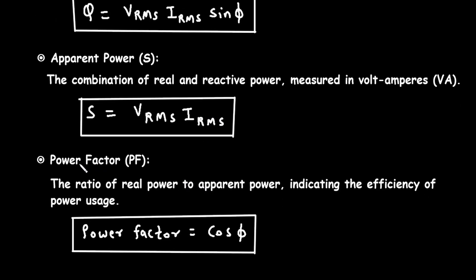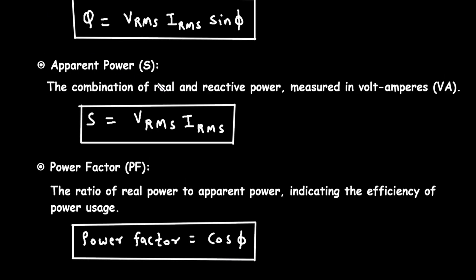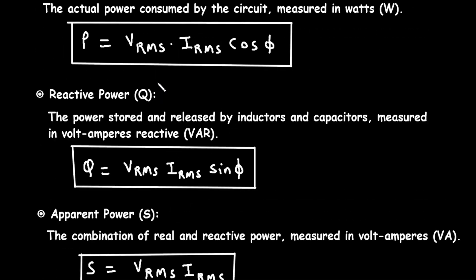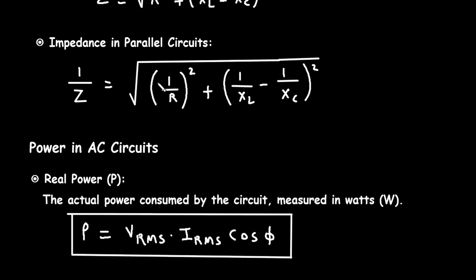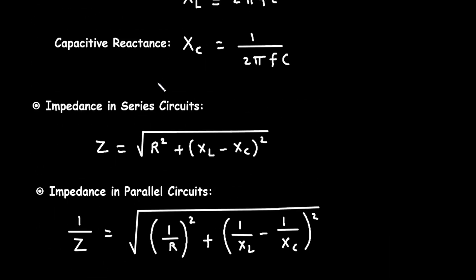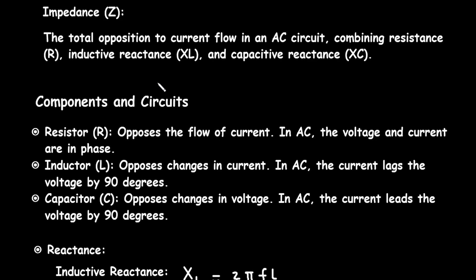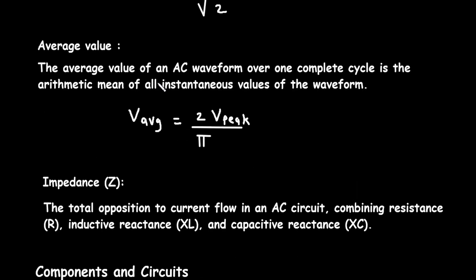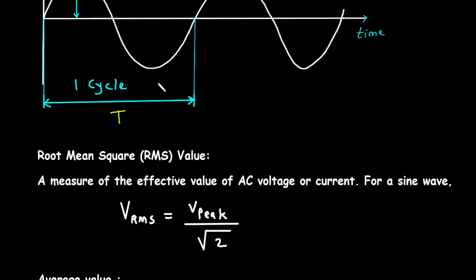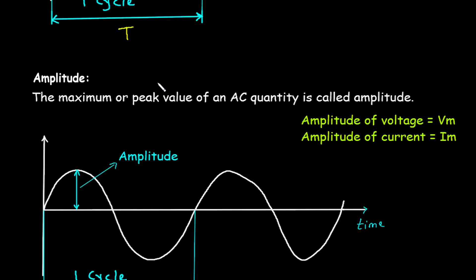Next is power factor, which is the ratio of real power to apparent power, indicating the efficiency of power usage. Power factor = cos φ. Understanding the fundamentals of AC is crucial for working with electrical systems, as it forms the basis of how electricity is generated, transmitted, and used in everyday life. From basic concepts of waveforms and frequency to the complexity of impedance and power calculations, mastering these principles is essential for anyone involved in electrical engineering or related fields.